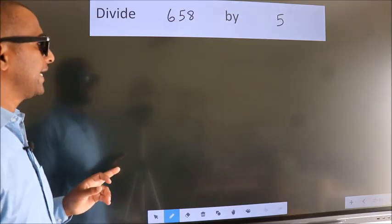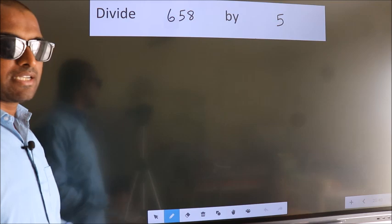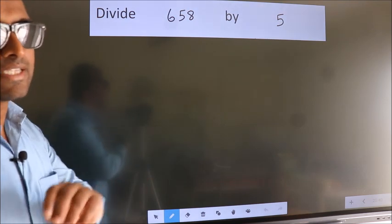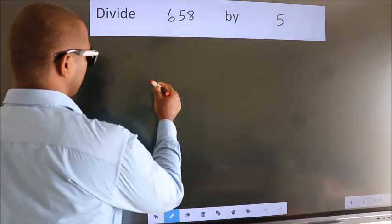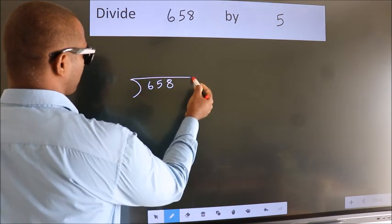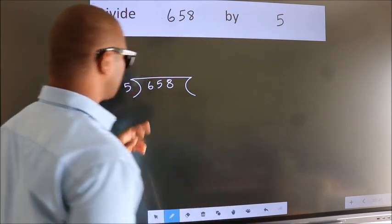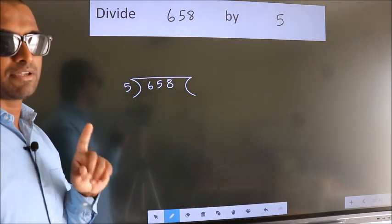Divide 658 by 5. To do this division, we should frame it in this way: 658 here, 5 here. This is your step 1.